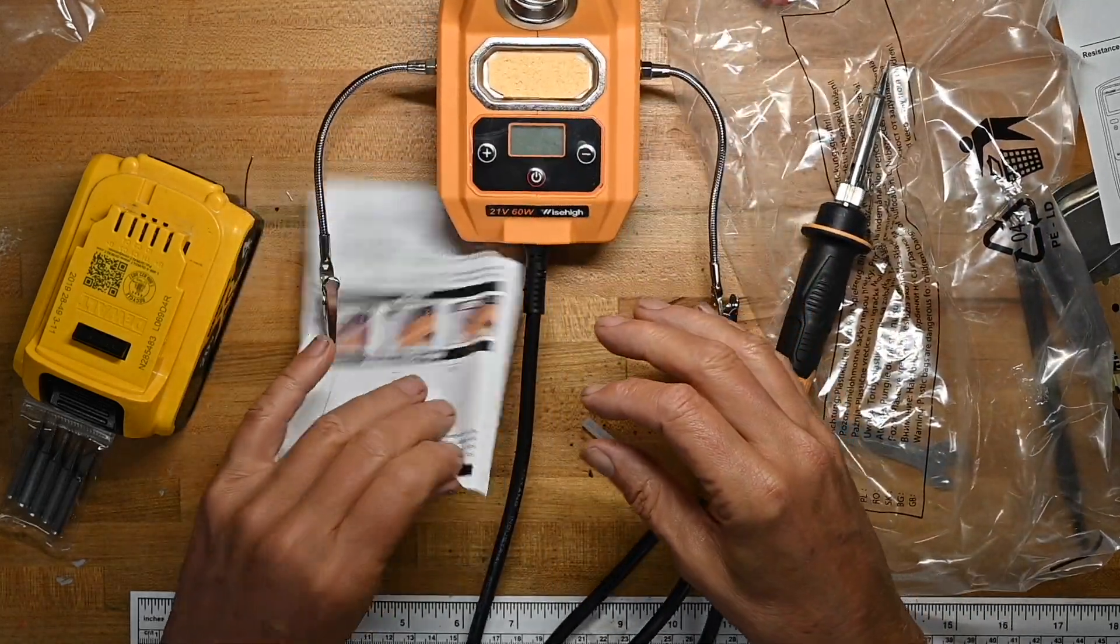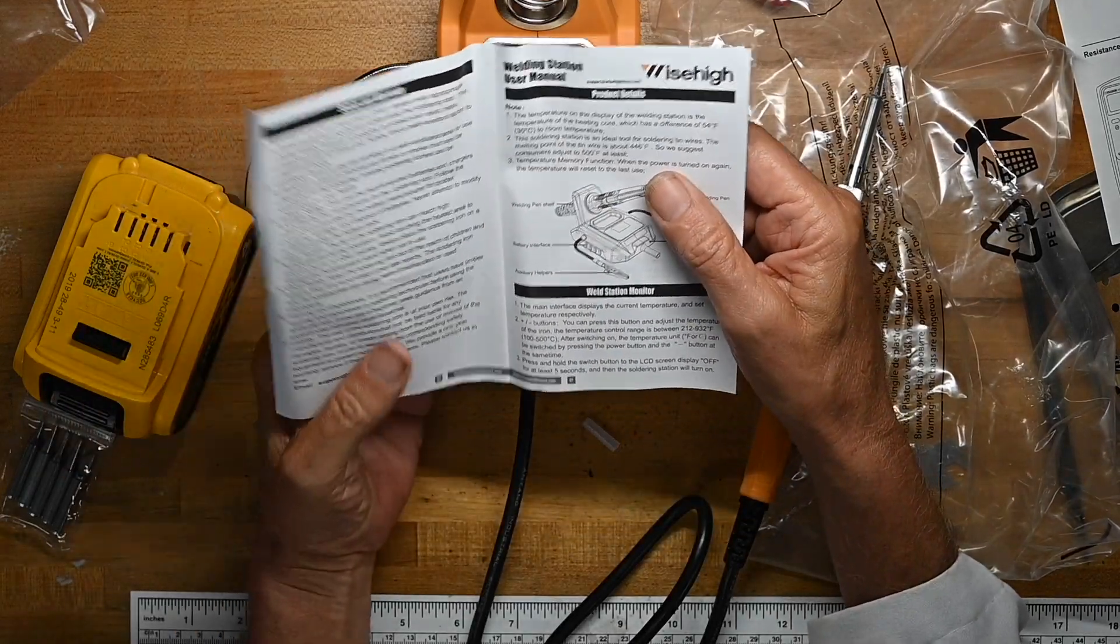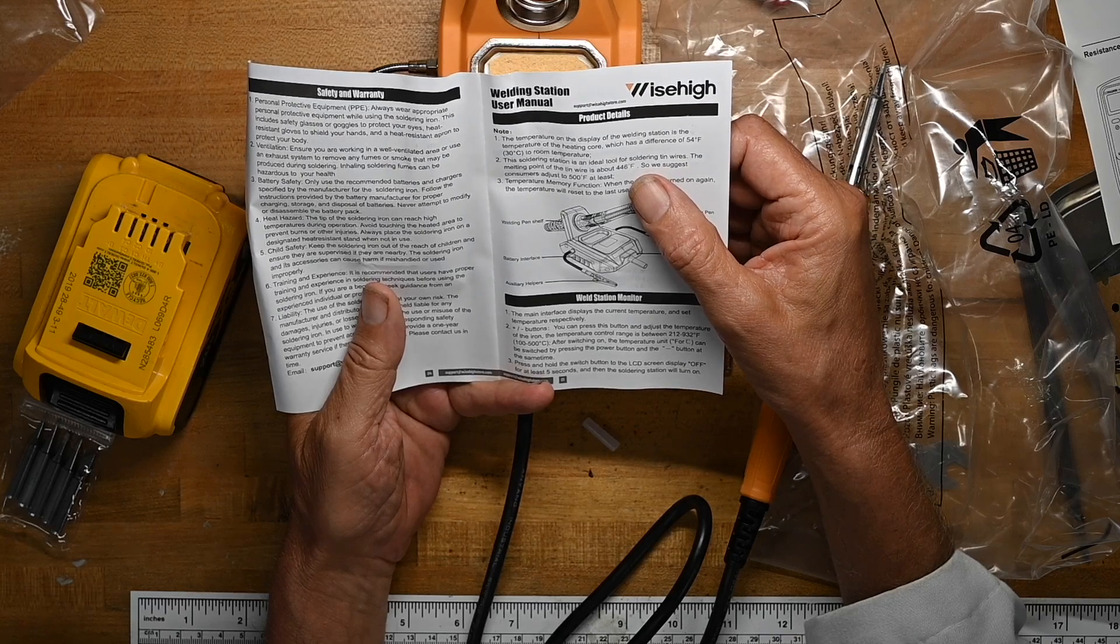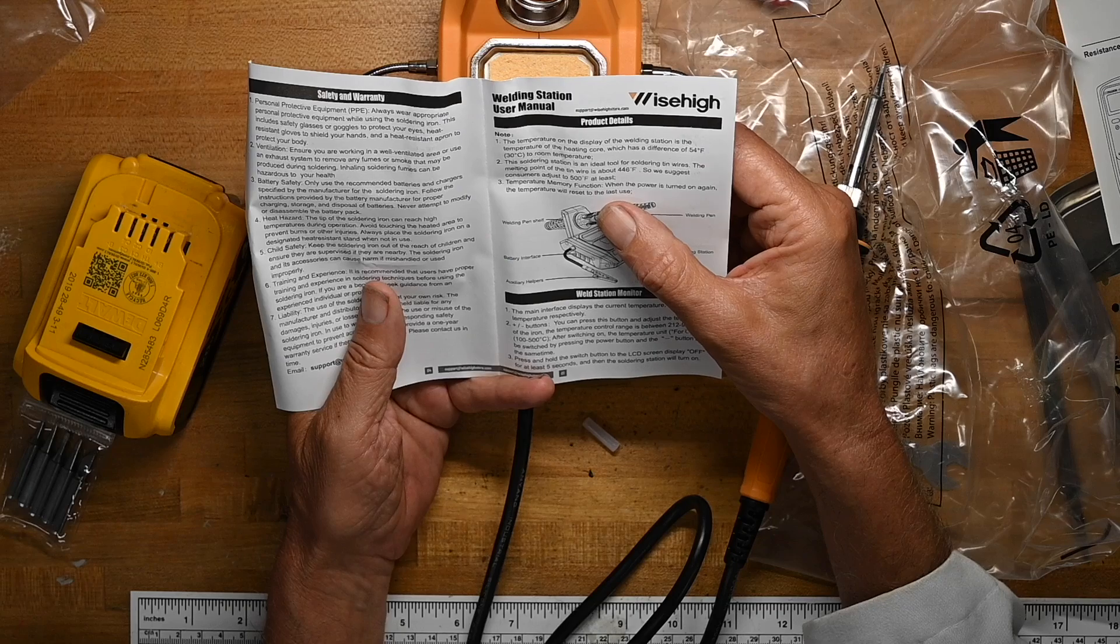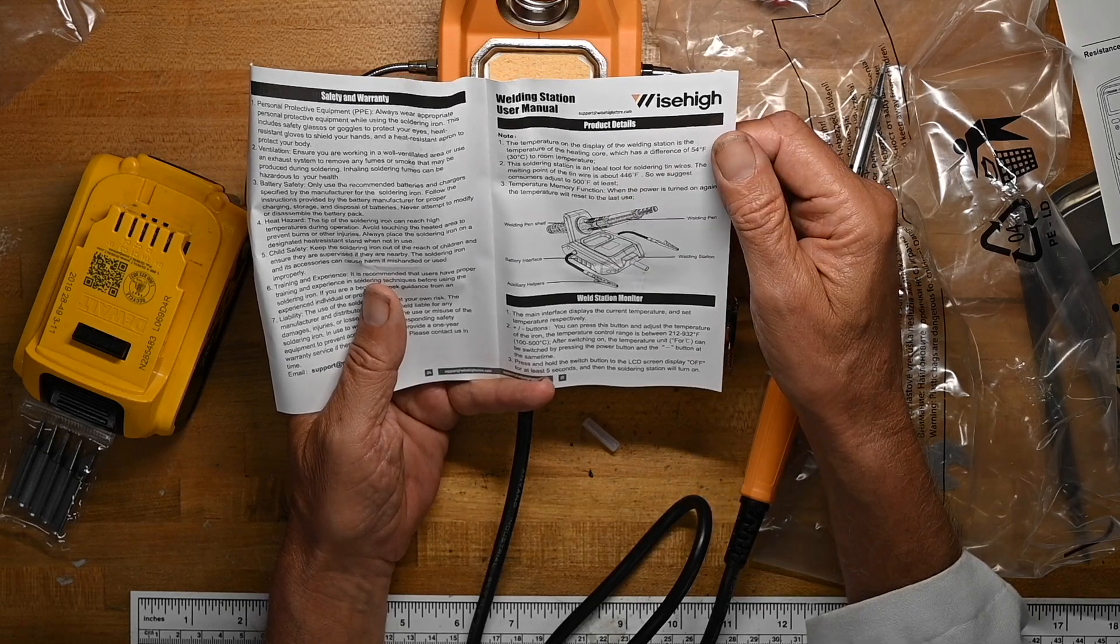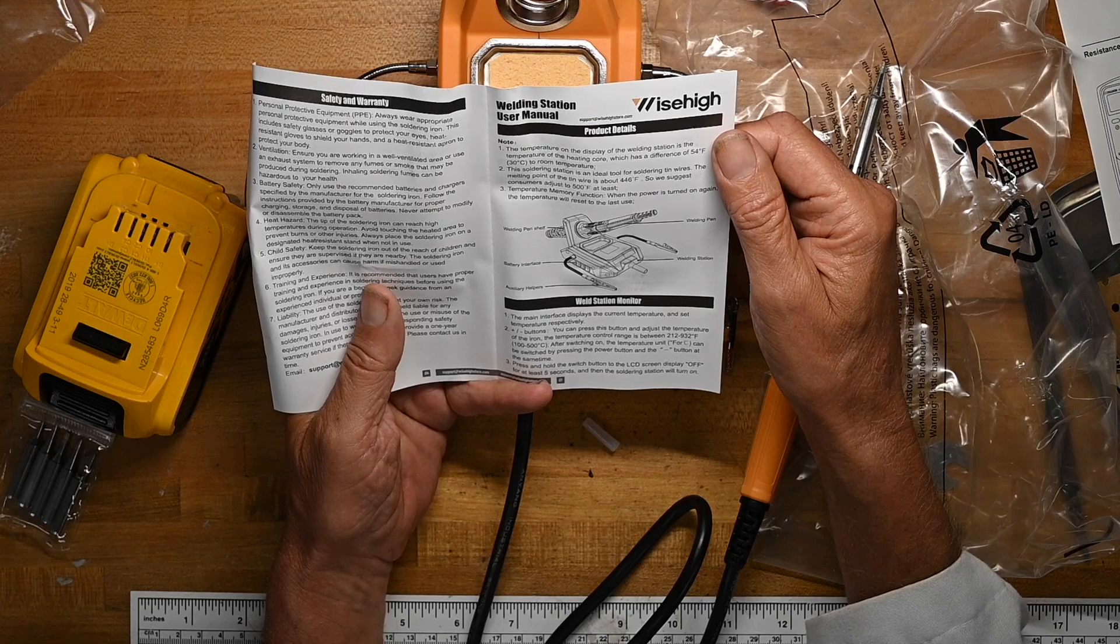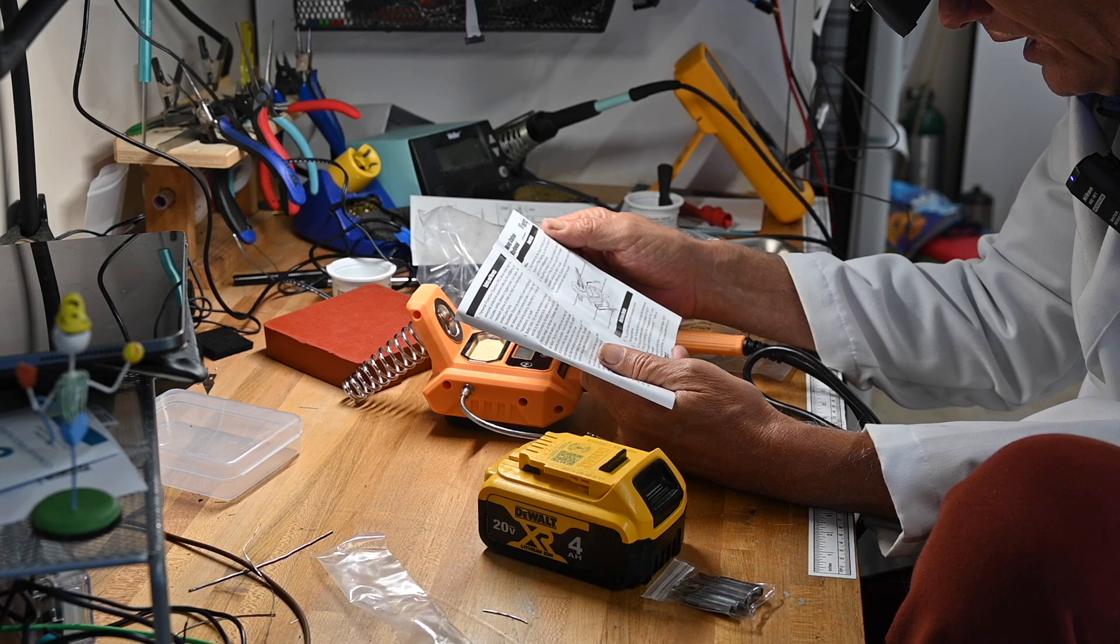Now we'll take a look at the instructions because they're very short. Temperature of the heating core, which is a difference of 54 degrees to room temperature. Soldering station, ideal tool for soldering tin wires. Temperature memory. When the power is turned on again, it'll reset to last use. That's nice.